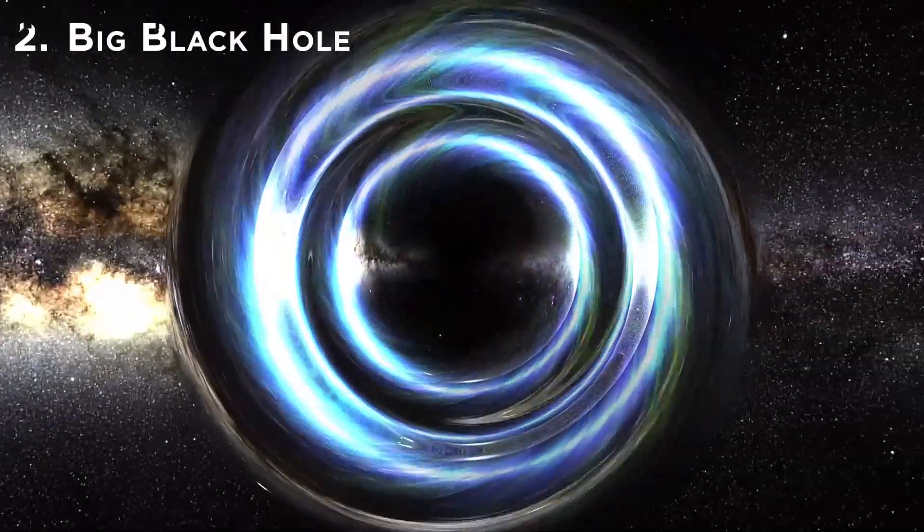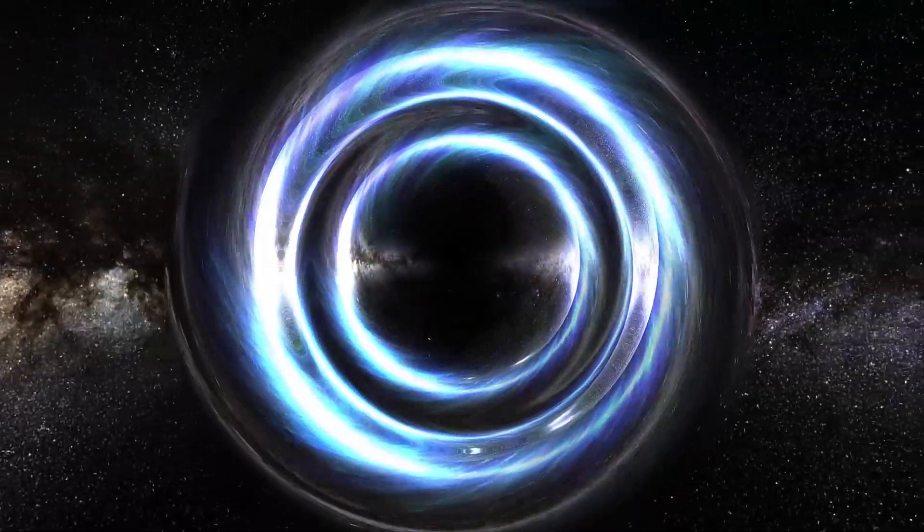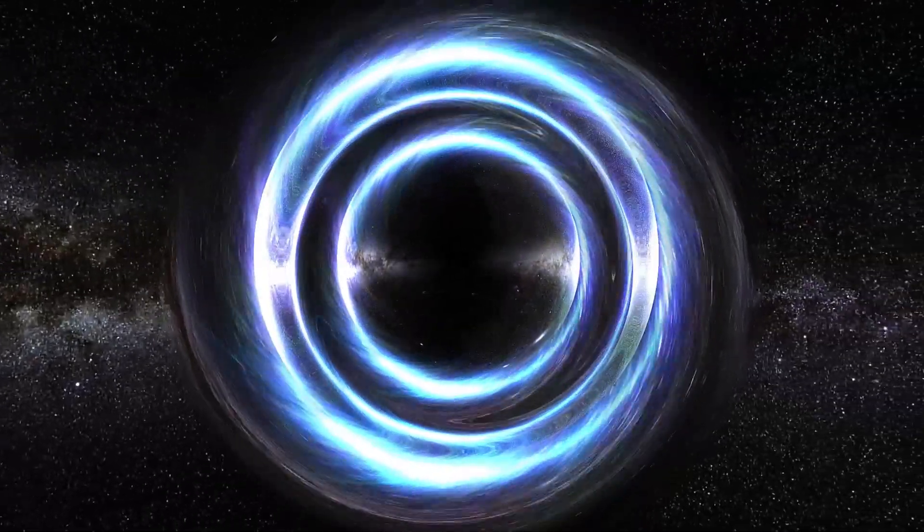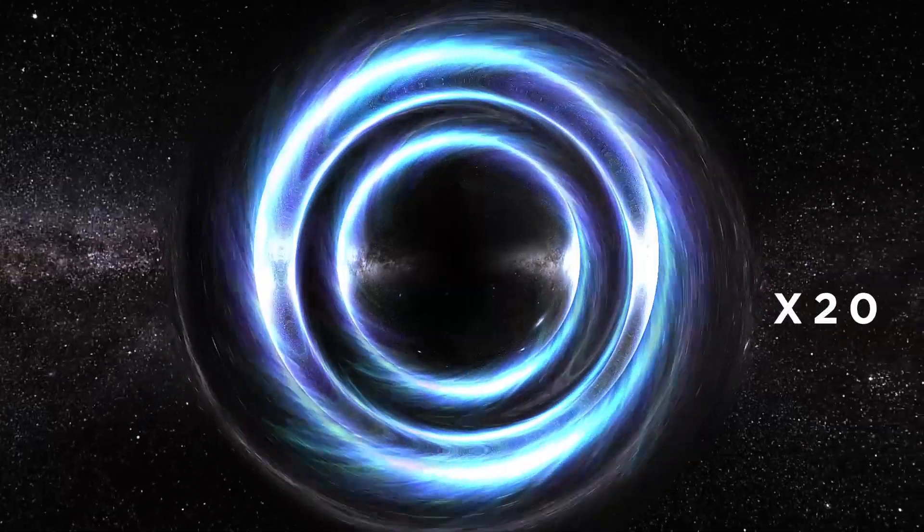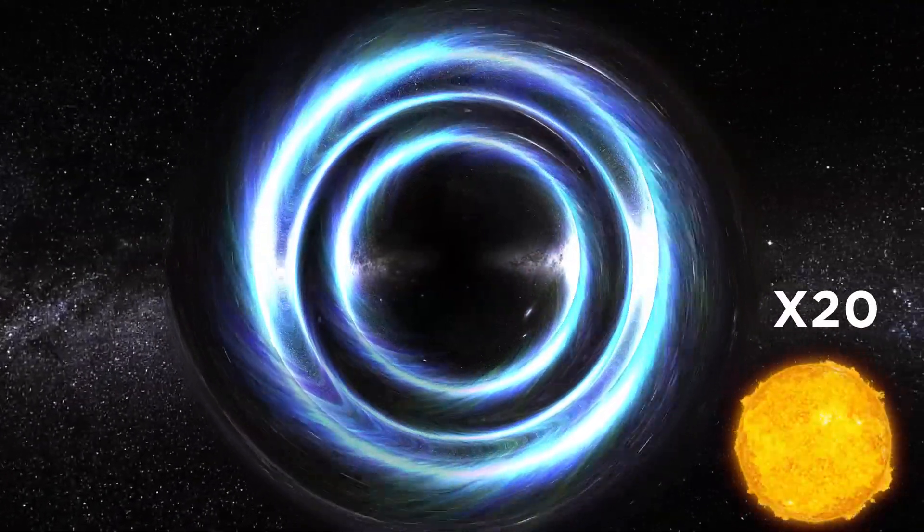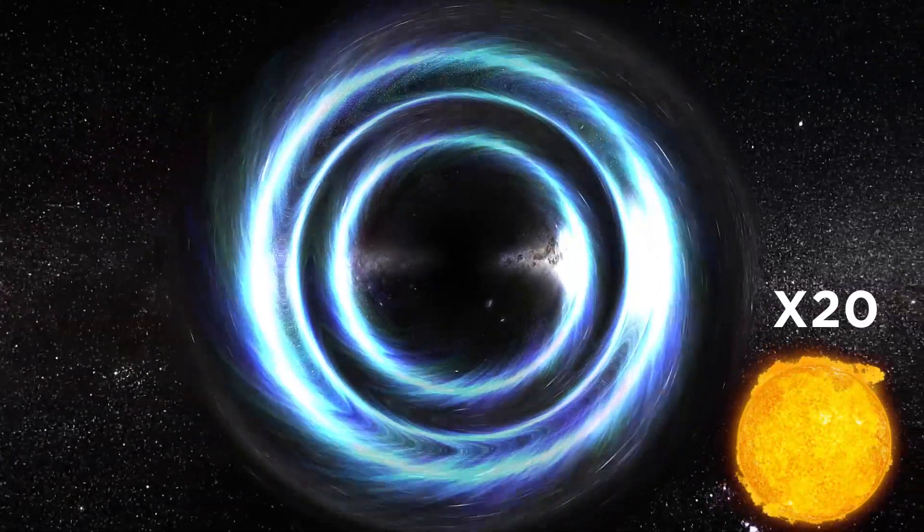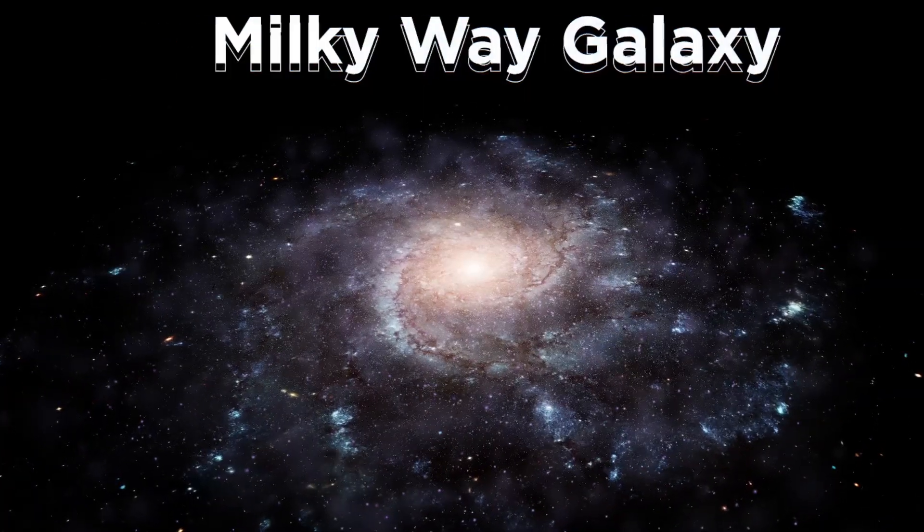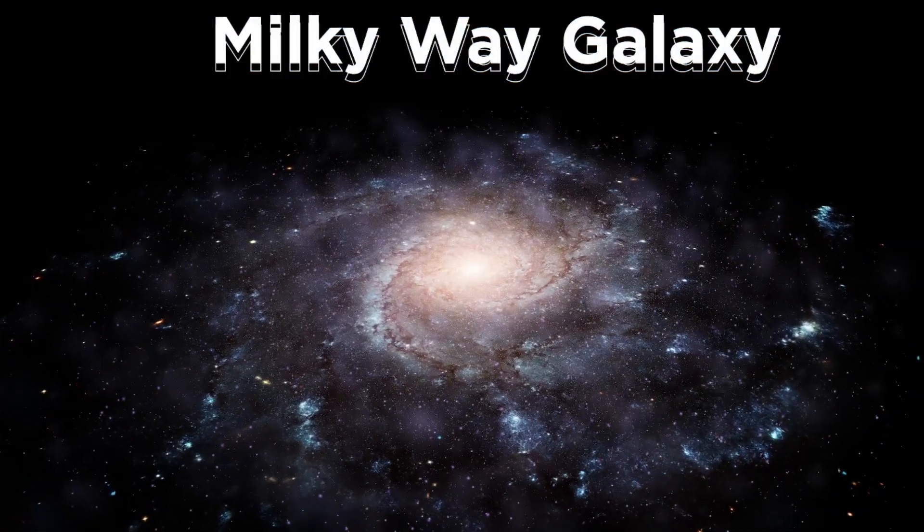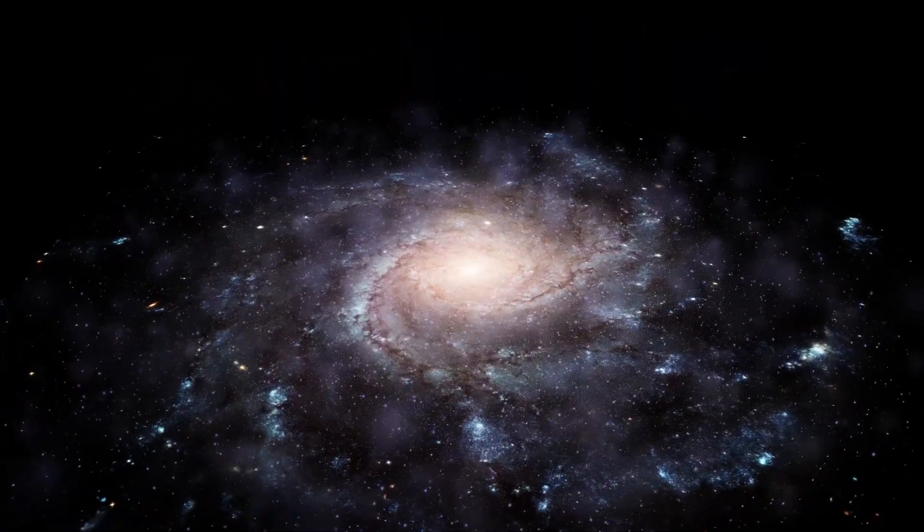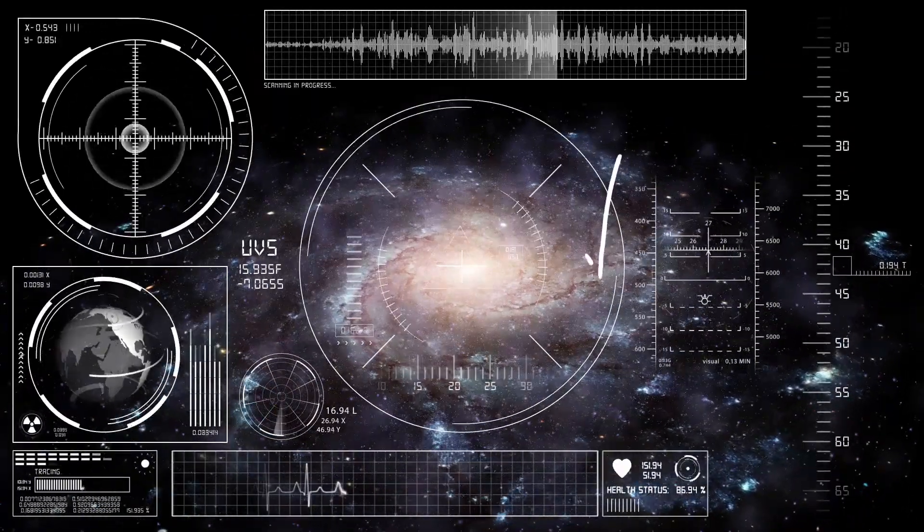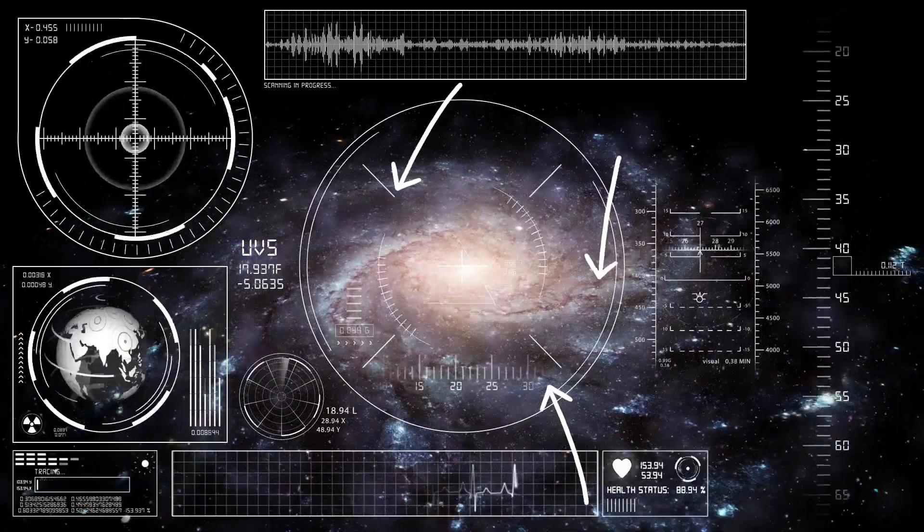Two, big black hole, also known as stellar black hole, and astonishingly its size is 20 times bigger than the size of our sun. To give you a sense of the number of black holes present in our Earth's galaxy, which is also called the Milky Way galaxy, NASA has also confirmed that there are not one but many stellar black holes present in our Milky Way galaxy.